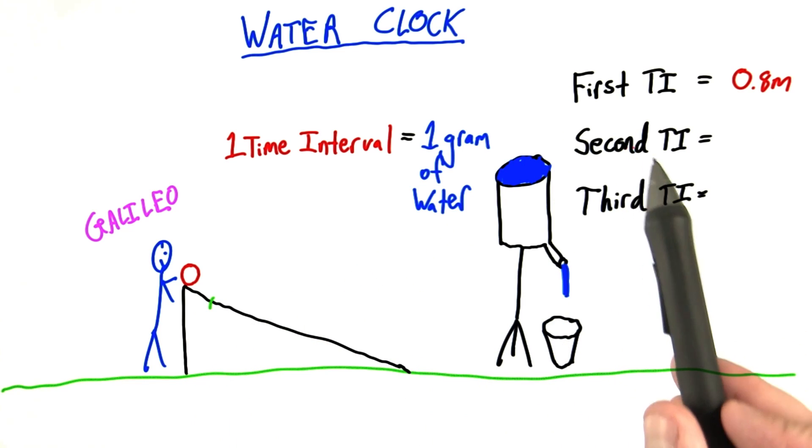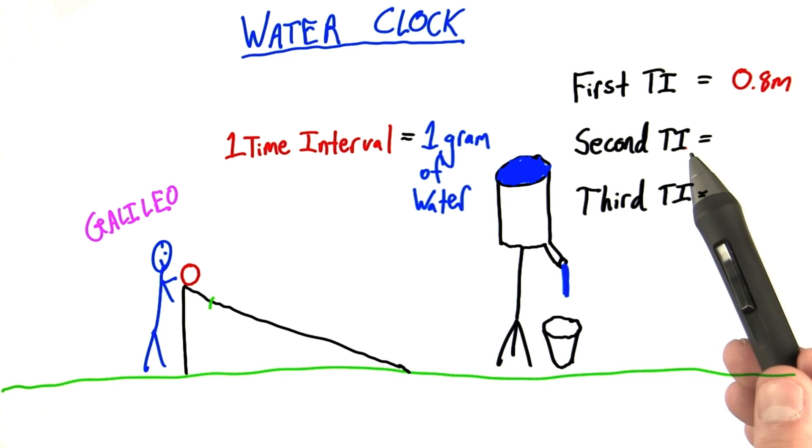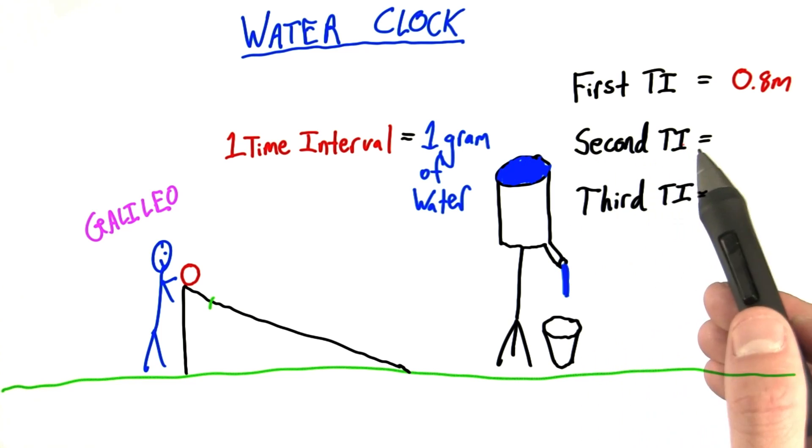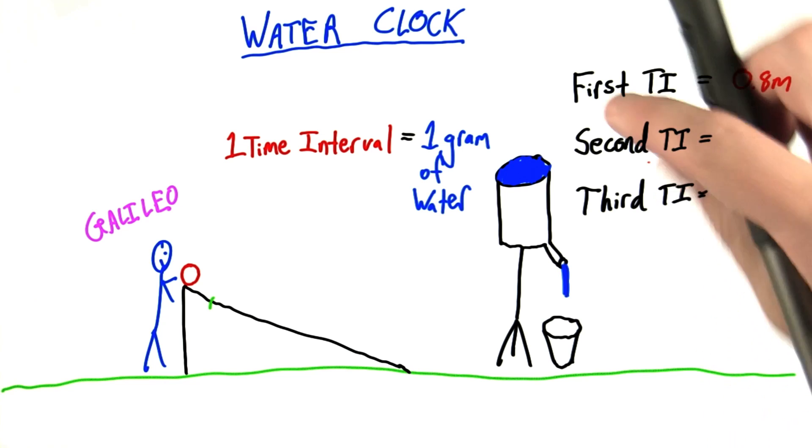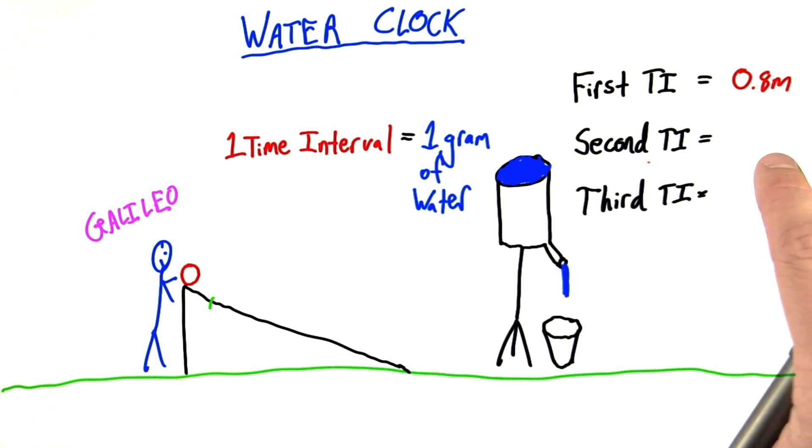What I want you to tell me is how far the ball rolls in the second time interval and in the third. Now, keep in mind I'm not asking how far it's rolled after two time intervals. That would be the sum of the first distance and the second time interval distance.